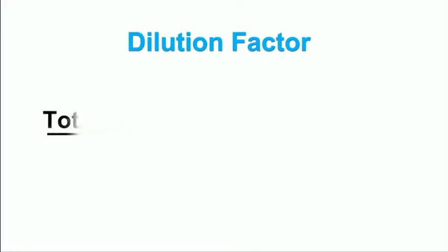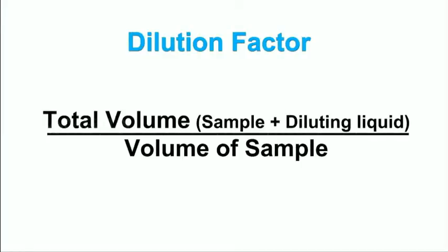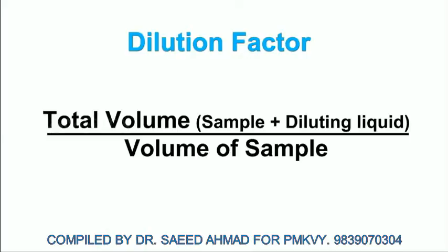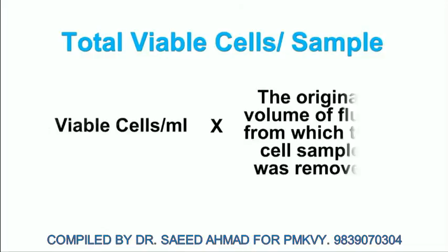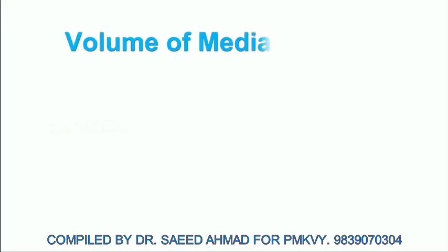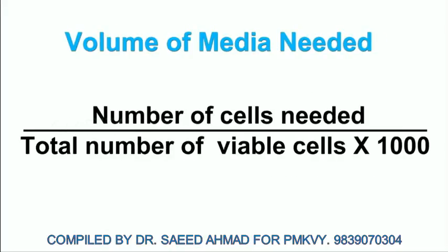The dilution factor equals the total volume (volume of sample plus volume of diluting liquid) divided by the volume of sample. Total viable cells per sample equals viable cells per milliliter multiplied by the original volume of fluid from which the cell sample was removed. Volume of media needed equals the number of cells needed divided by total number of viable cells, multiplied by 1000.